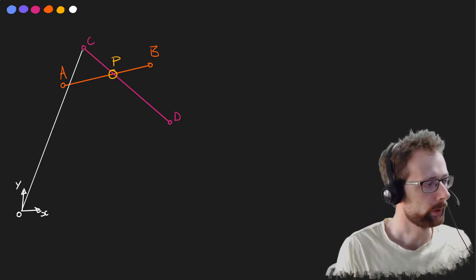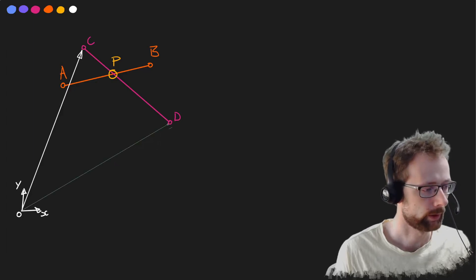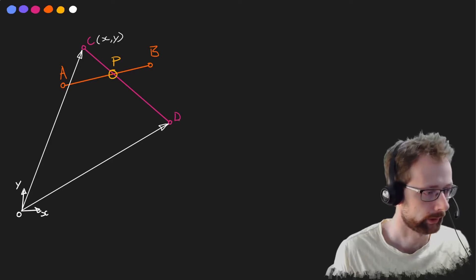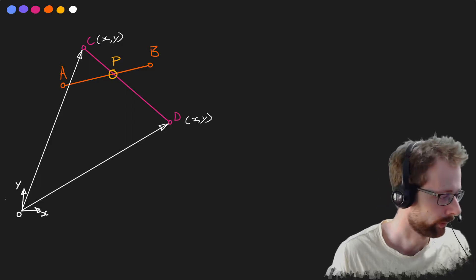It's worth remembering that all of these points are actually vectors from our origin. So c has an x component and a y component, and d also has an x component and a y component.